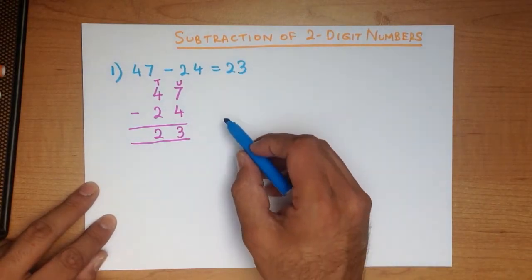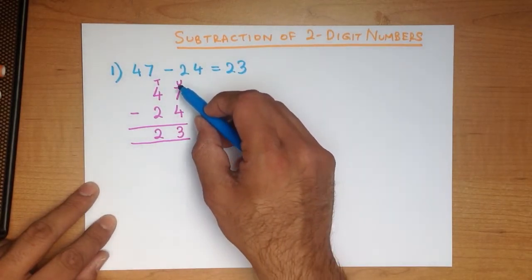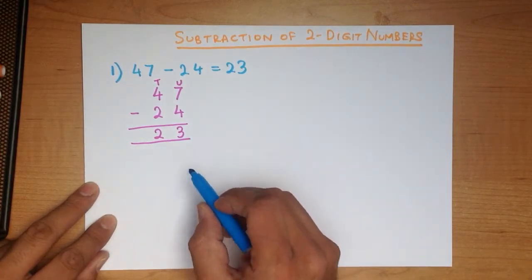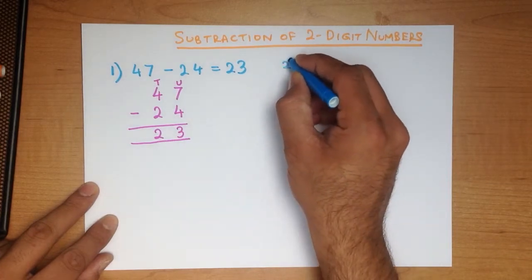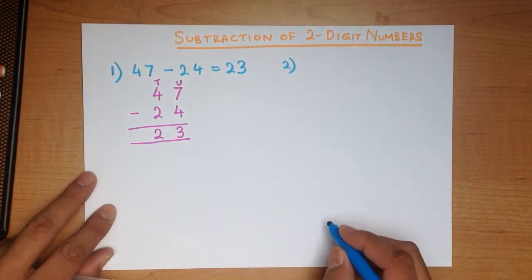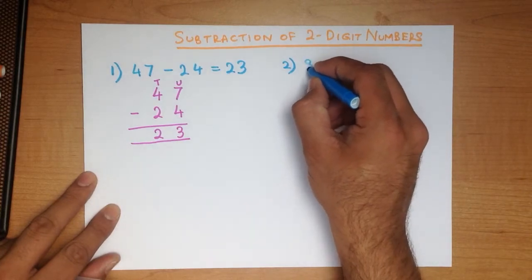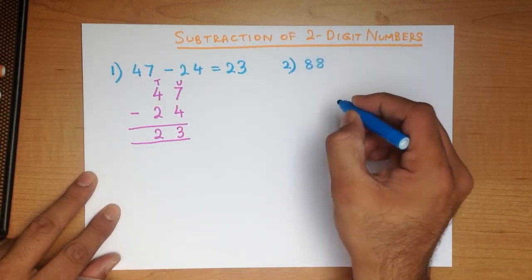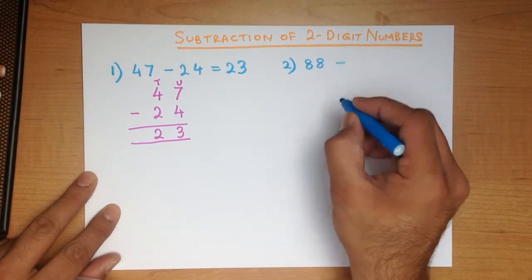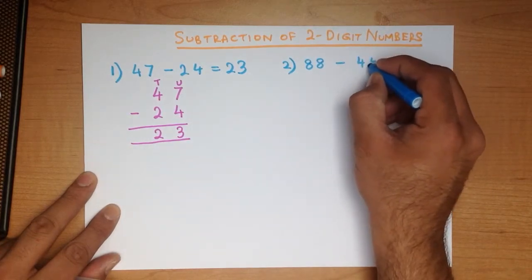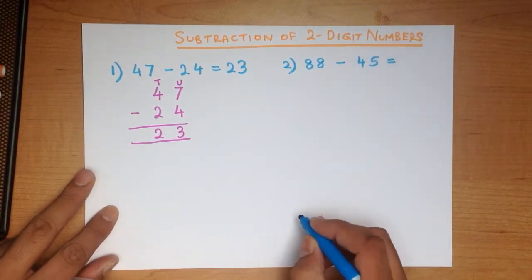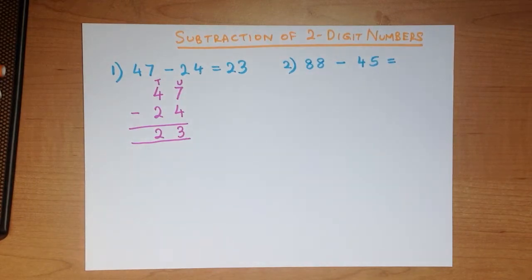Do you see how easy it is to subtract two-digit numbers using the vertical format? Let's work through another one, which has slightly larger numbers. What is 88 minus 45?